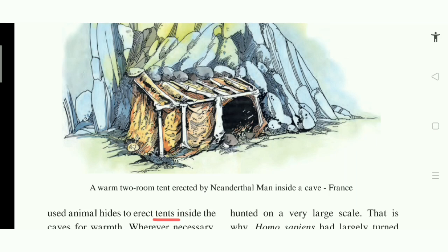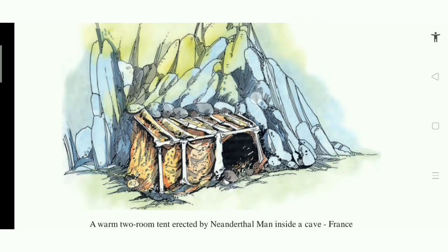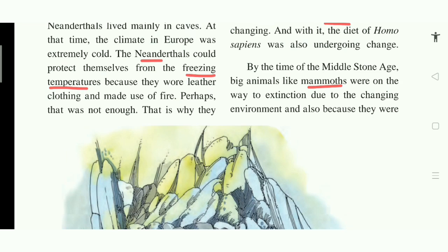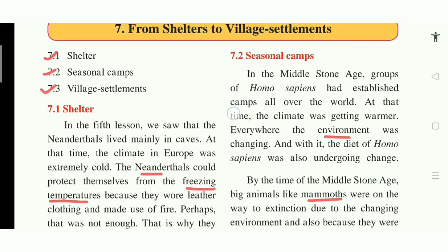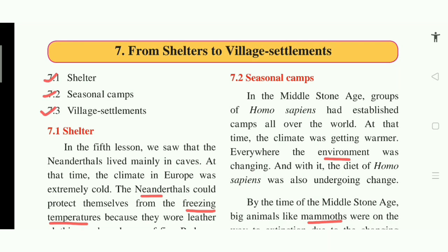On this basis, we can say that to protect themselves from the freezing temperature, Neanderthals took shelter in caves and learned to erect tents. Now let's move on to the next point, which is seasonal camps.